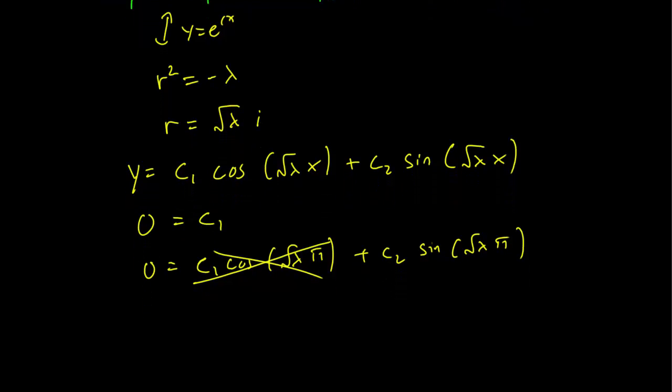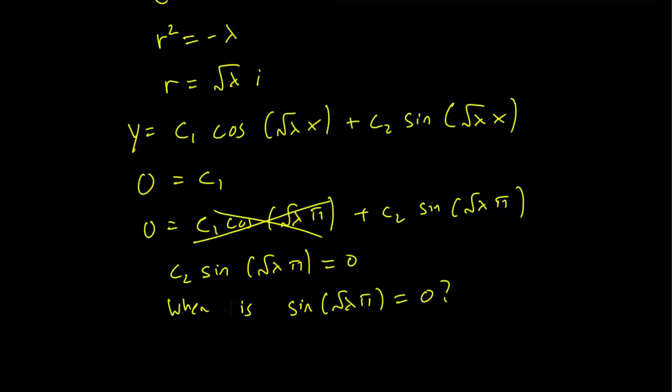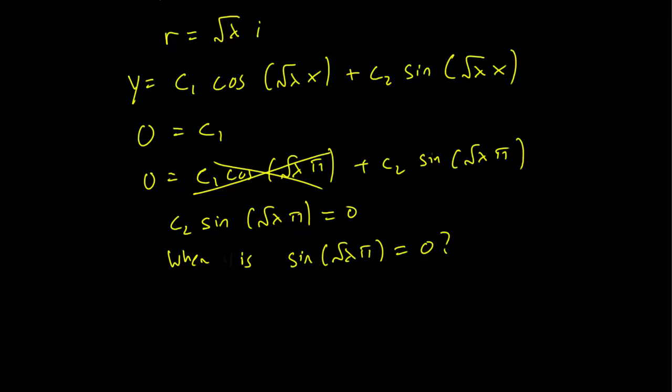So we need to look at solutions of the form, we need to find out when c₂ sin(√λ π) equals zero. And we ask a similar question again. When is sin(√λ π) equals zero? Because if this expression is equal to zero, then c₂ is a solution for any constant c₂. And we can answer this pretty easily. The sine function is zero whenever the argument is a multiple of pi.